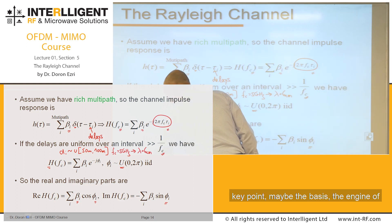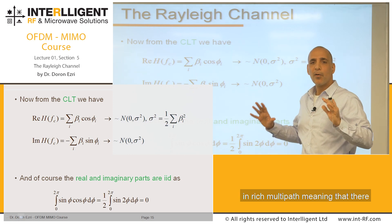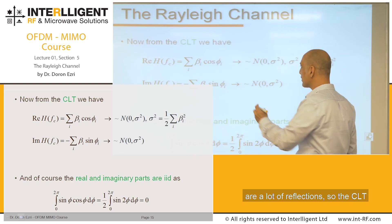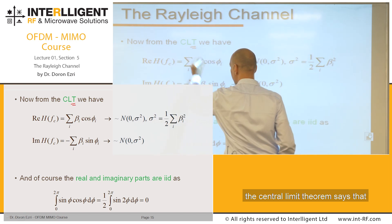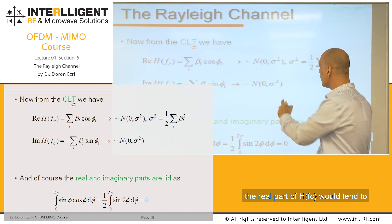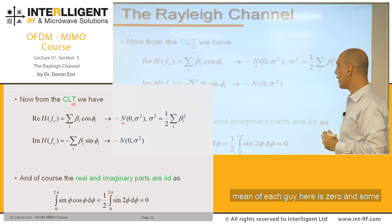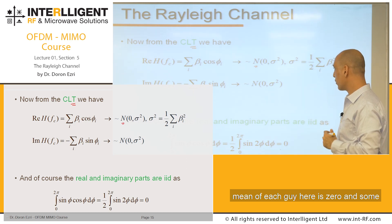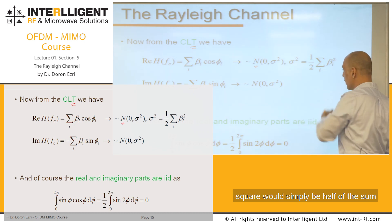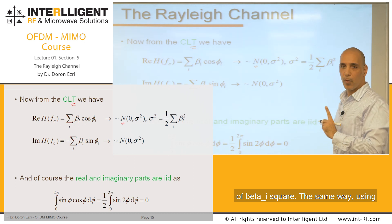And now to the key observation, to the key point, maybe the basis, the engine of everything. If we assume that we are in rich multipath, meaning that there are a lot of reflections, the CLT (central limit theorem) says that the real part of H(fc) would tend to be normal with zero mean, because the mean of each guy here is zero, and some variance sigma^2. In our case, sigma^2 would simply be half of the sum of beta_i^2.